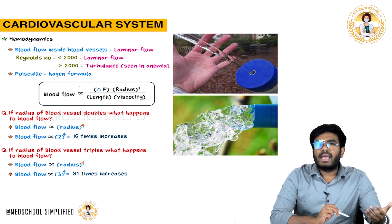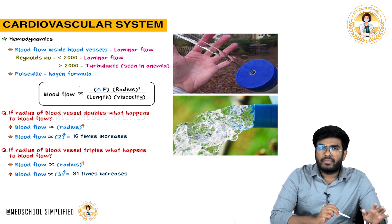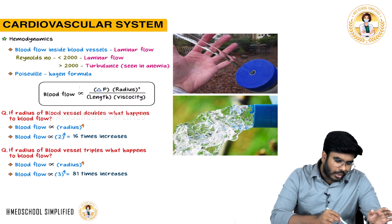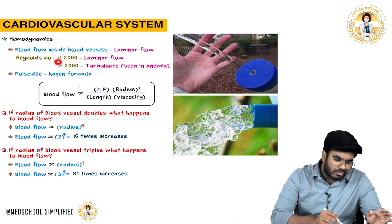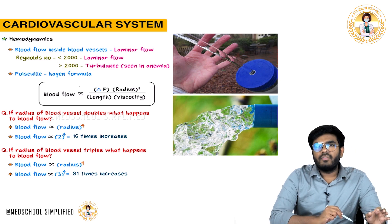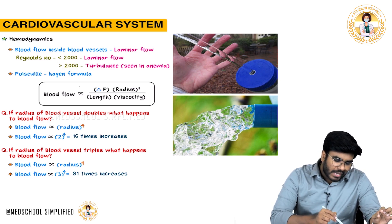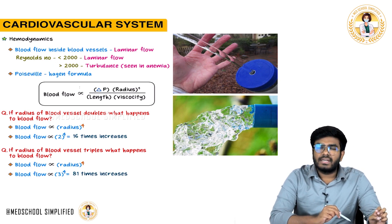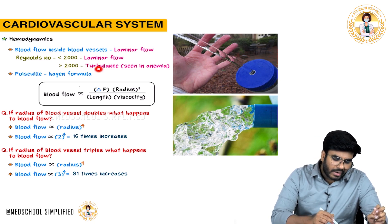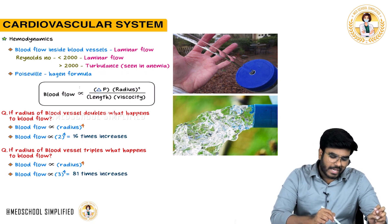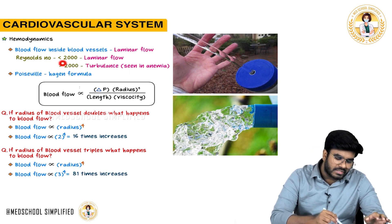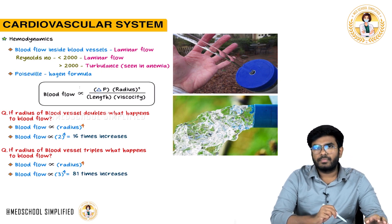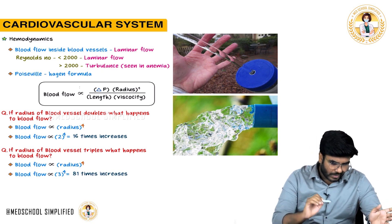Whether the fluid is going to go in the laminar fashion or turbulent fashion is determined by a number called the Reynolds number. If the Reynolds number is less than 2000, the fluid will go in the form of laminar flow. If the Reynolds number is greater than 2000, the fluid will go in turbulent fashion. Turbulence is going to be seen in anemia — in anemia, the Reynolds number is more than 2000, so turbulence occurs.